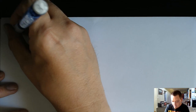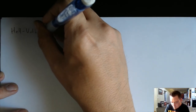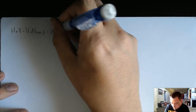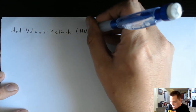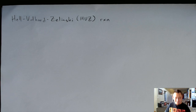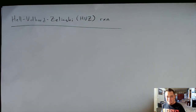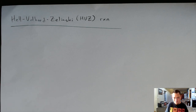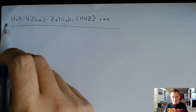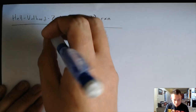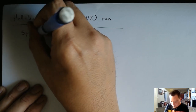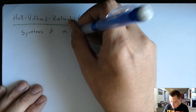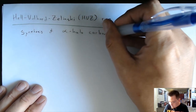The HVZ reaction is short for Hell-Volhard-Zelinsky. People will often just call this the HVZ reaction because it's easier to say. The main focus of the HVZ reaction is for the synthesis of alpha-halo carboxylic acids. It's actually an application of a couple of different reactions happening all together — not actually that hard.